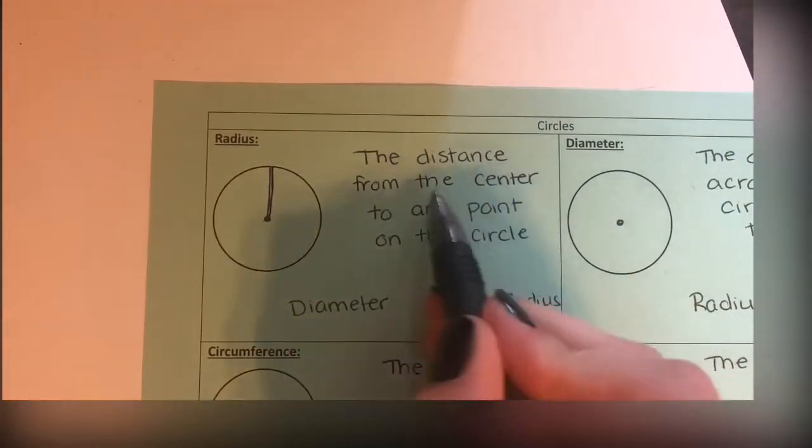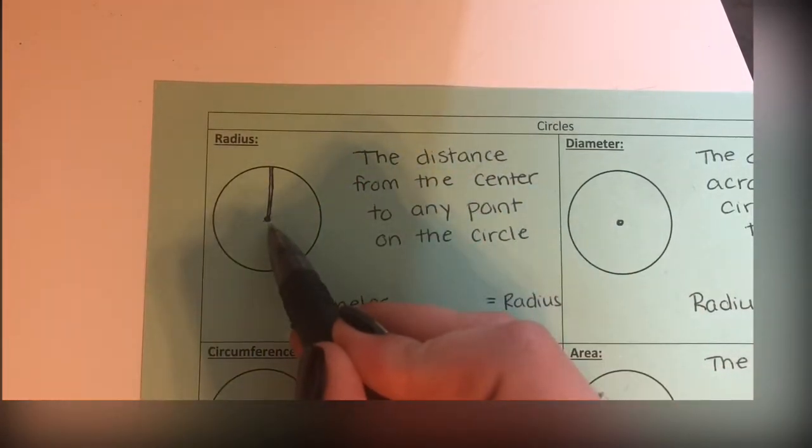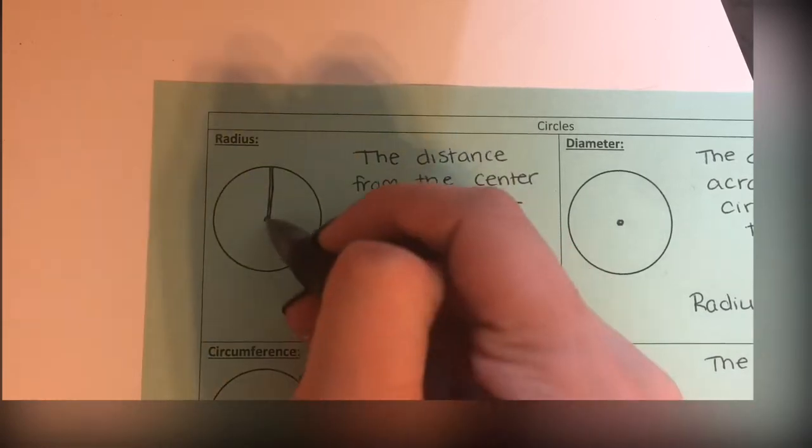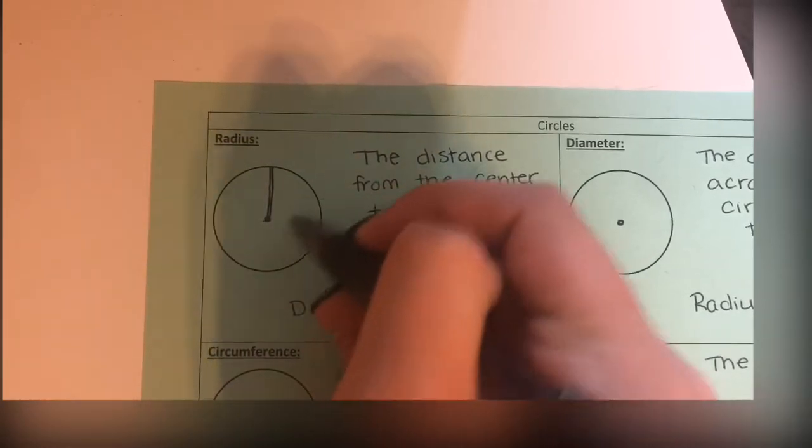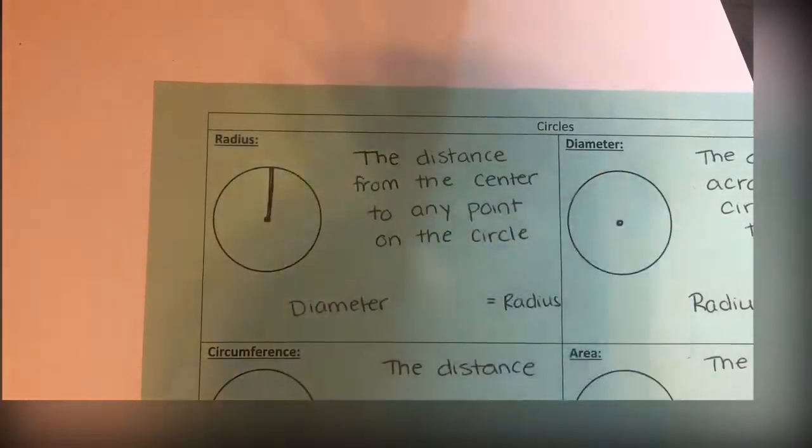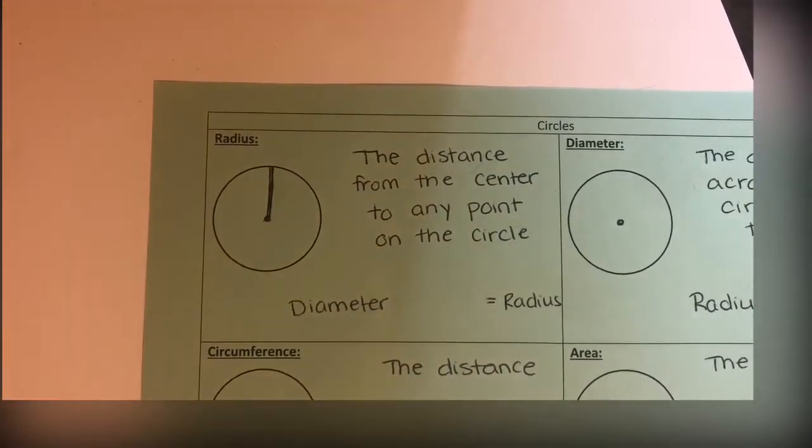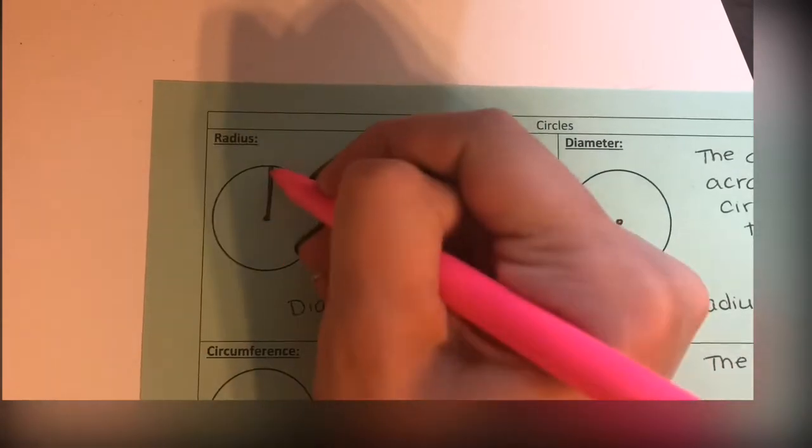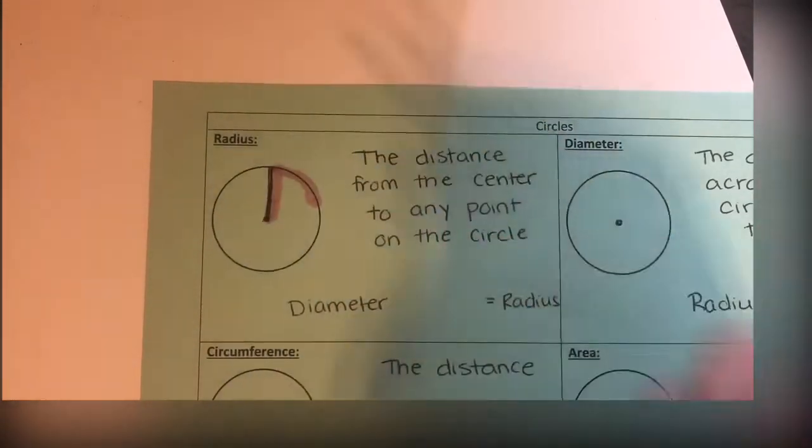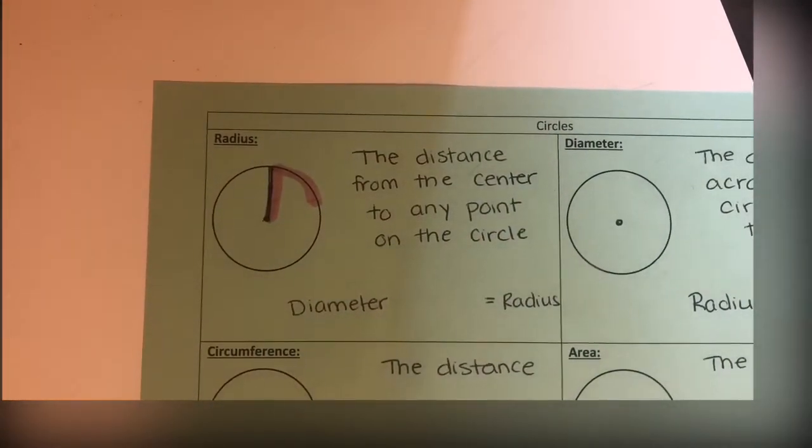Radius is the distance from the center point to any point on the circle. I could draw the radius anywhere if I wanted to, but I just drew it right here. This is the short line, this is the half line. One way that I like to remember that this is radius is that it makes a little 'r.' See how it kind of makes an 'r'? Radius.